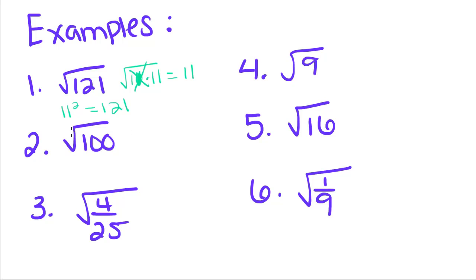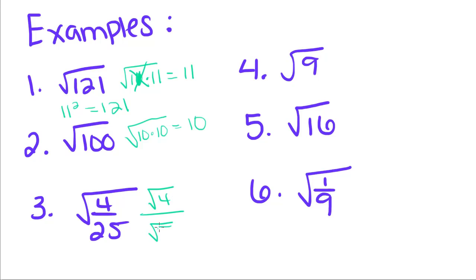This one's pretty easy. What times what equals 100? 10 times 10 — so you get 10. Now, just like we square the top and the bottom of a fraction, we're going to take the square root of the top and bottom separately. So what times itself gives me 4? Well, 2 times itself gives me 4. And what times itself gives me 5? 5. So the answer is 2 fifths.